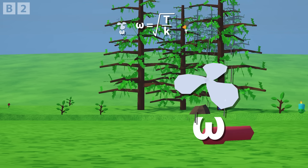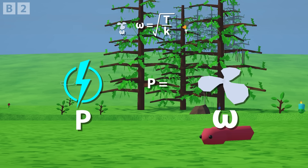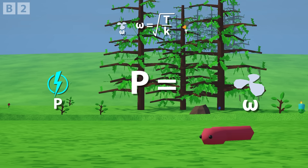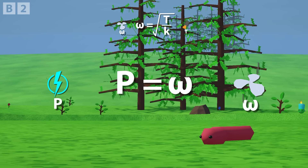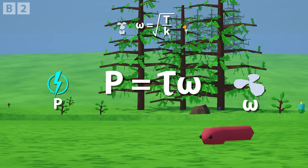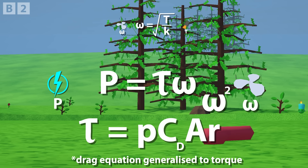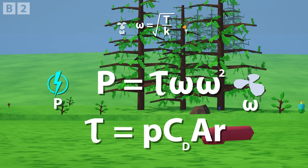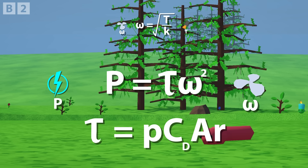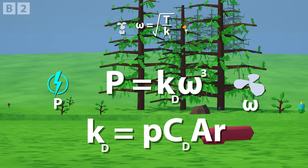Next, we take our spin rate and convert that to power. The power required to maintain a certain spin rate is equal to that spin rate multiplied by the torque acting on it, which in this case is the air resistance against the blades. This air resistance scales with spin rate squared, so when we multiply it with the spin rate term, this comes out as spin rate cubed.